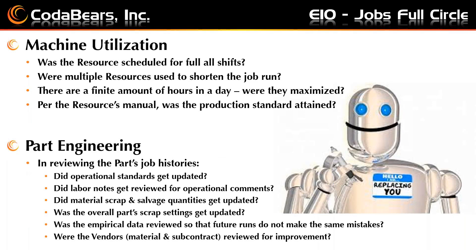Machine utilization — did the resource get used for all the shifts? If we're open three shifts, was the machine only working one shift? Do we need to get a robot in there instead of an operator? Could we use multiple resources to shorten a job run rather than run it on one machine for months? There are only so many hours in a day — did we maximize what we have? If I can get more parts through the plant floor within the same day, that's the name of the game.